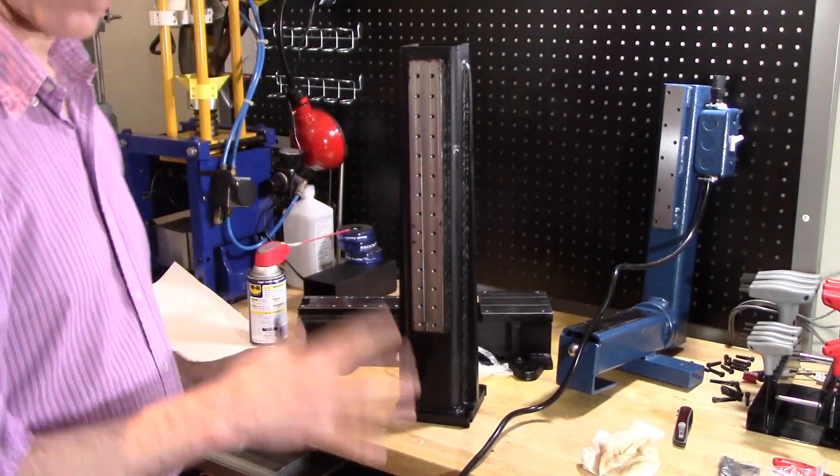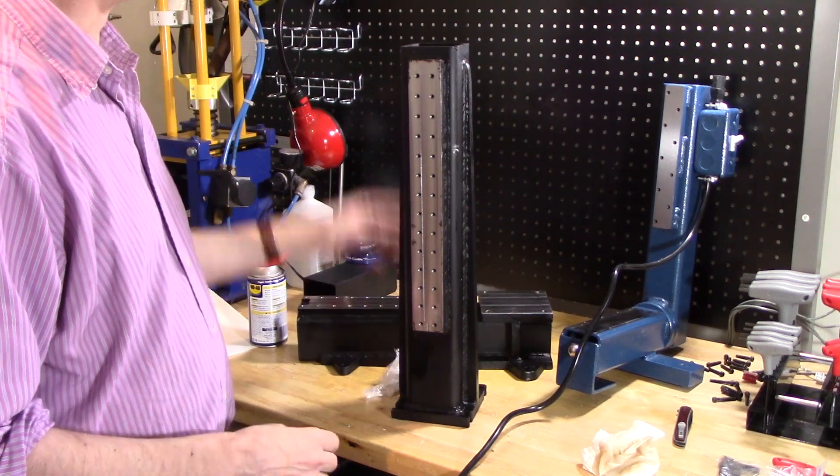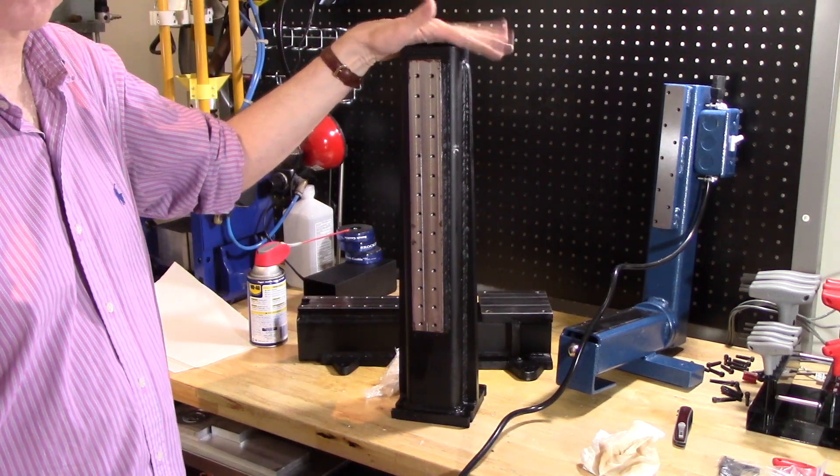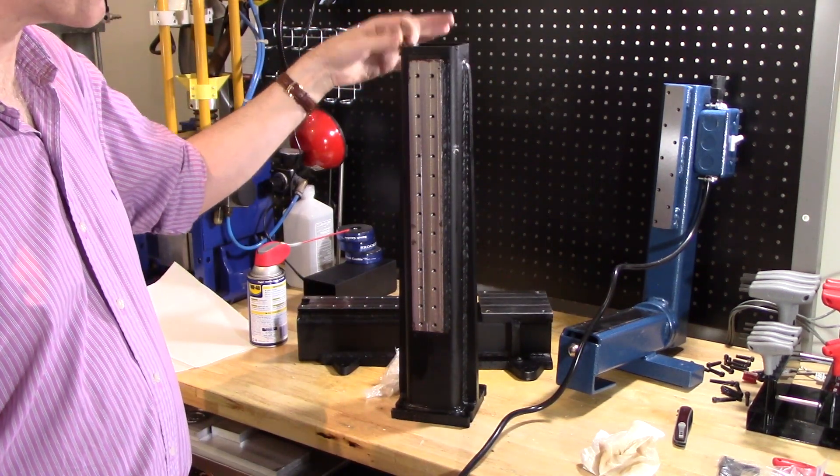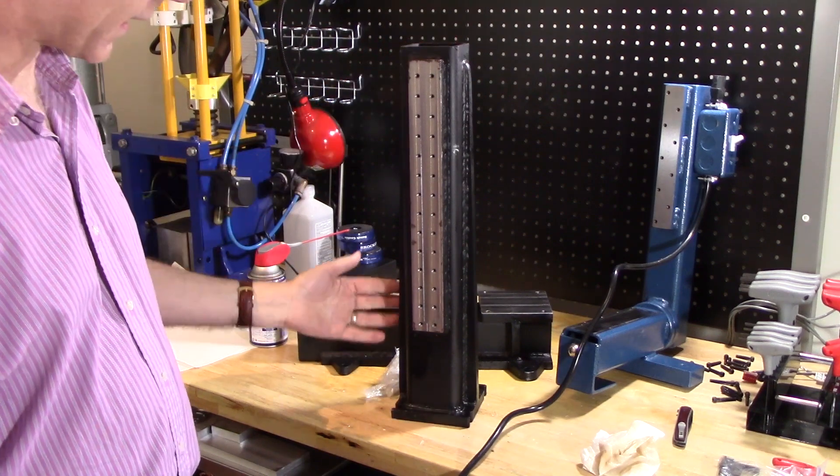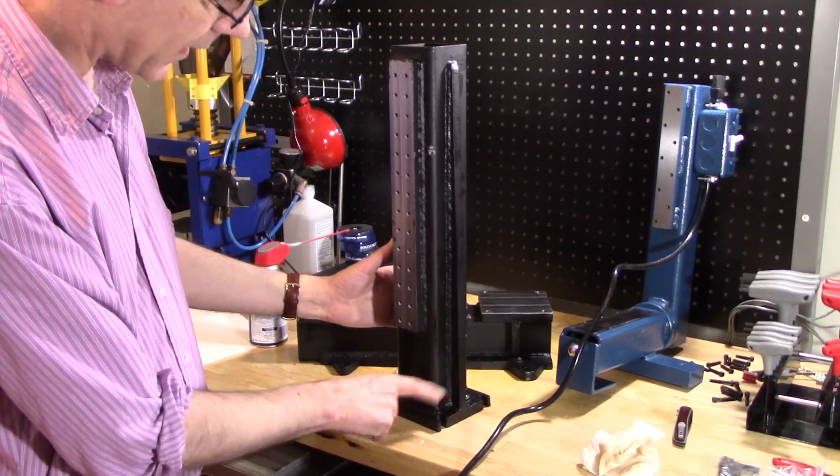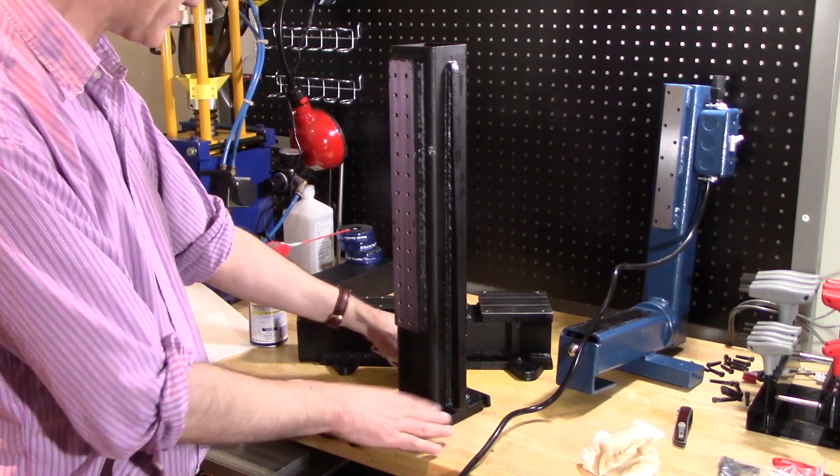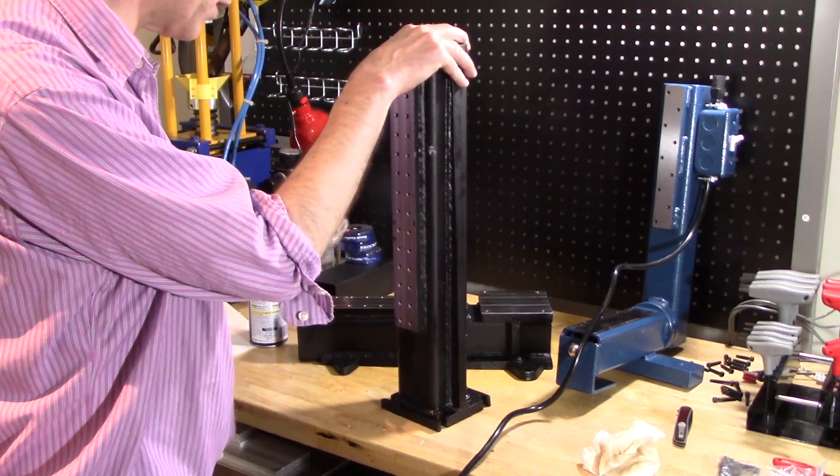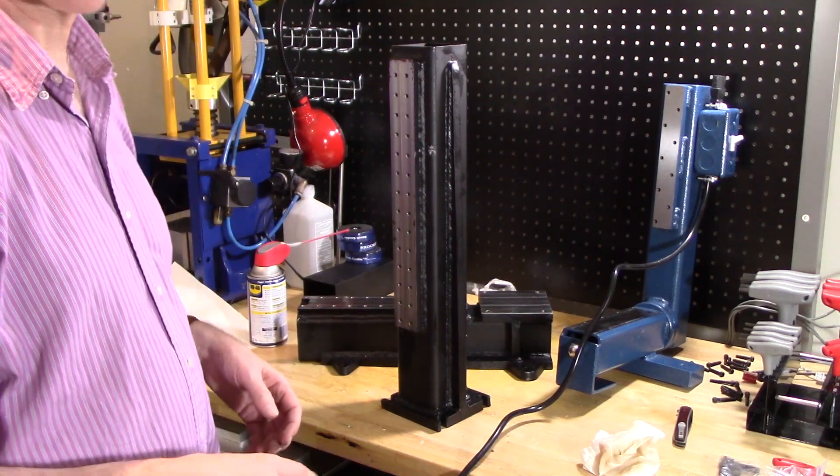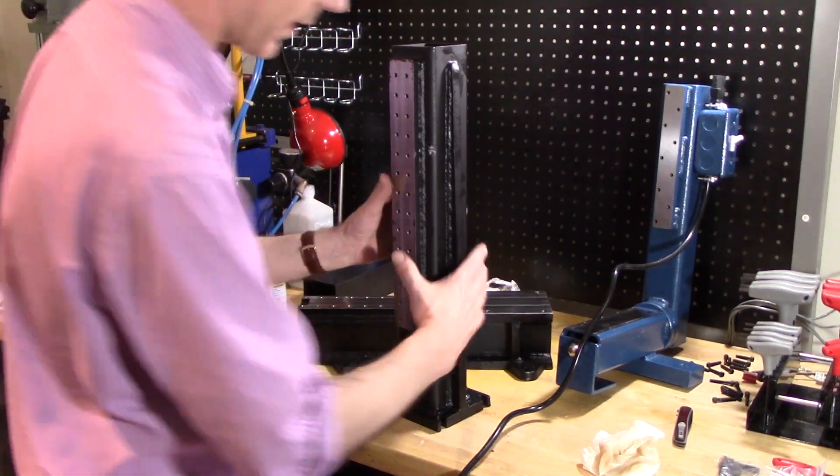This whole frame is a whole lot beefier than the other one. This is made out of tube, just like the other one, but it's made out of thicker tube. It has some ribs on the side to give it additional strength and it's got a much thicker base. So all in all, it should be very nice. Now what I'm going to do is assemble these two.